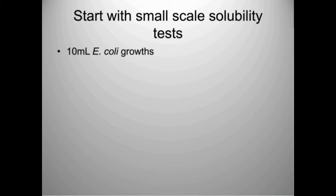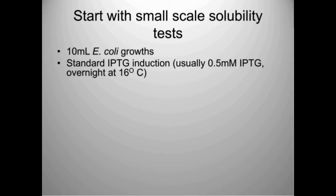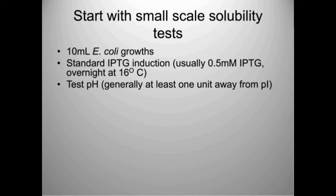We break protein purification into two stages: small scale first, then large scale once conditions are optimized. On the small scale, we test for solubility and expression using SDS gels. We grow 10 mL E. coli cultures, induce with IPTG at a standard concentration, and usually induce overnight at 16 degrees—lower temperature generally helps. We grow a dozen or 20 of these small cultures and resuspend each pellet in a different buffer to test which conditions give better solubility.